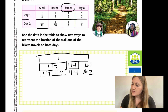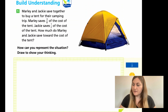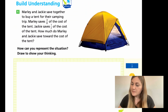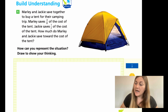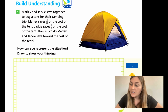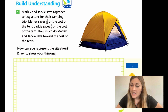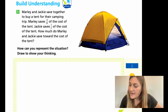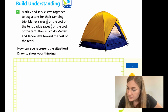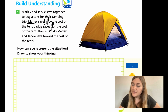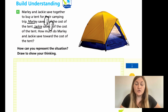Let's go on to the next page, page 130, the Build Your Understanding. The problem says Marley and Jackie save together to buy a tent for their camping trip. Marley saves three-eighths of the cost of the tent, and Jackie saves half the cost of the tent. How much do Marley and Jackie save towards the cost of the tent? So we want to know how much they saved together — this is addition.